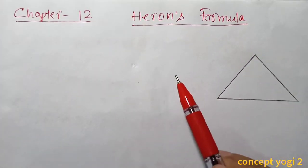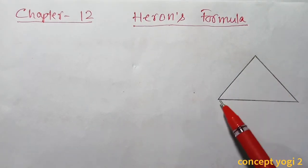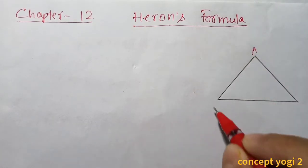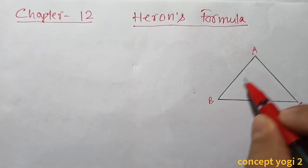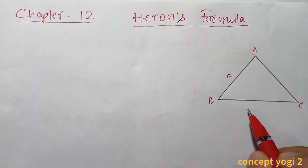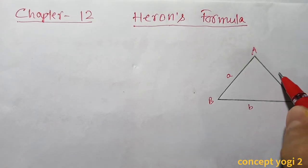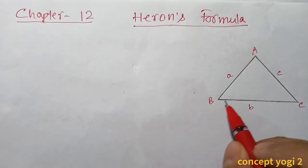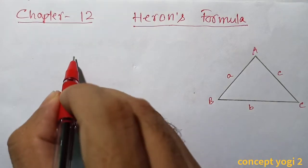Hi friends, in this video we shall learn Heron's formula and by using Heron's formula we will find the area of a triangle. Say triangle ABC has side AB = a, side BC = b, and side AC = c. If I add the measure of all the sides, I will get the perimeter.